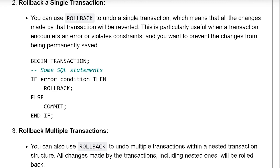Rollback a Single Transaction: You can use Rollback to undo a single transaction, which means that all the changes made by that transaction will be reverted. This is particularly useful when a transaction encounters an error or violates constraints and you want to prevent the changes from being permanently saved.